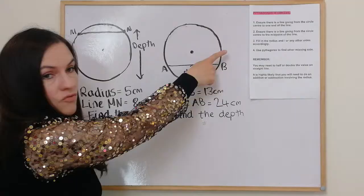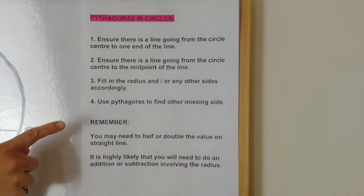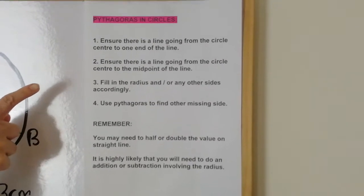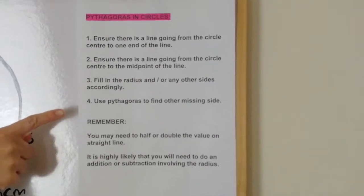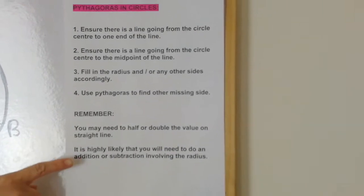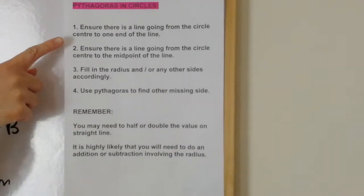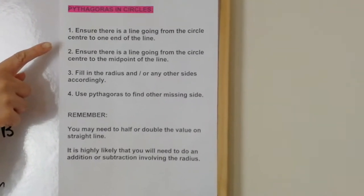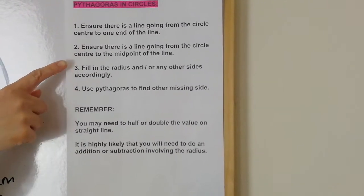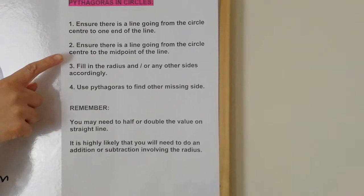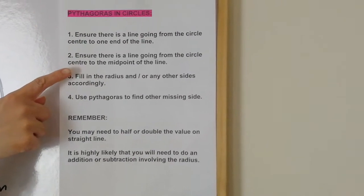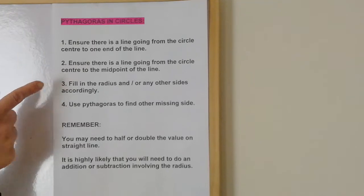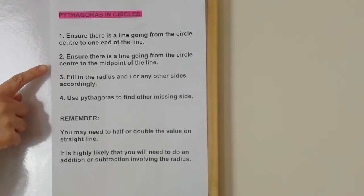So first of all, here is the four-step guide. I suggest that you get a copy or a screenshot. There are four steps and just two other parts you need to remember. Step one says you have to ensure that there's a line going from the circle centre to one end of the line. Step two says ensure that there's a line going from the circle centre to the midpoint of the line, in order to get your right-angle triangle to do Pythagoras on.